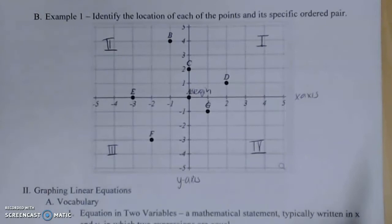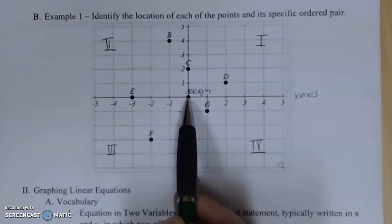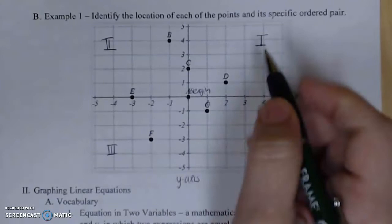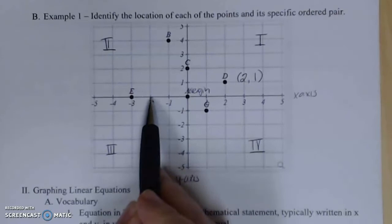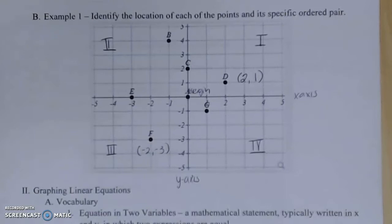Now, as for its specific ordered pair, let's look at point D. Origin A we already know is at the point (0, 0). But D, notice if I went to get from A to D, I would have to move 1, 2 units to the right, and 1 unit up. So point D would be the ordered pair (2, 1). Say I went to look at point F. I would have to, from the origin, go to the left 2 and down 3. So this would be at the ordered pair (-2, -3).